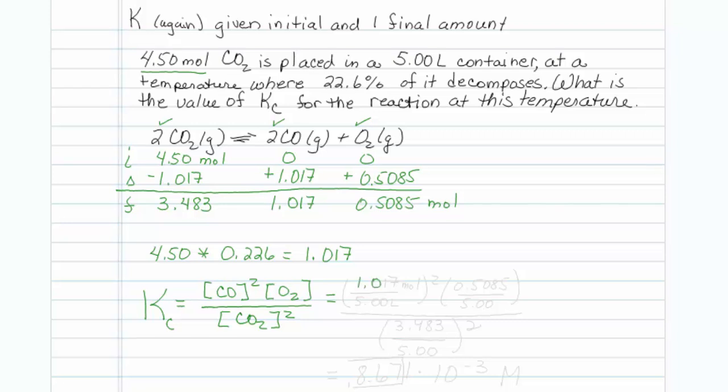So CO is 1.017 over my container volume of 5 liters squared. My oxygen is 0.5085 over my container volume, and my CO2 is going to be 3.483 over my container volume, and that one is also squared. Putting that into my calculator, I get a value of 8.671 times 10 to the minus 3.